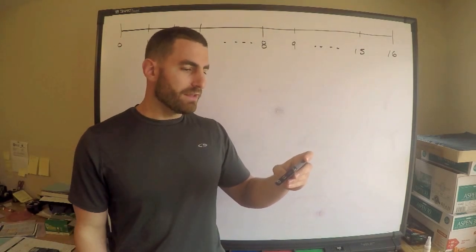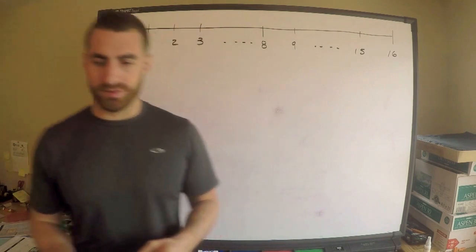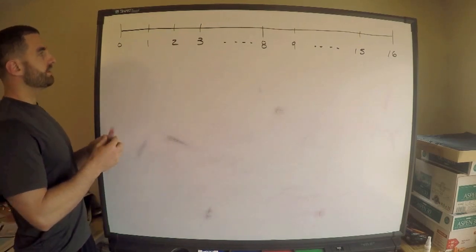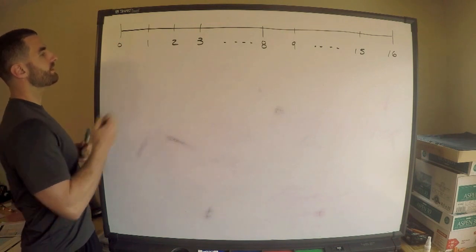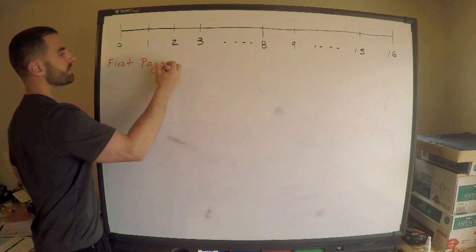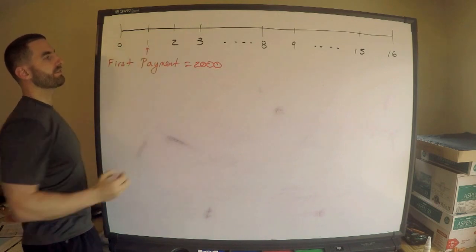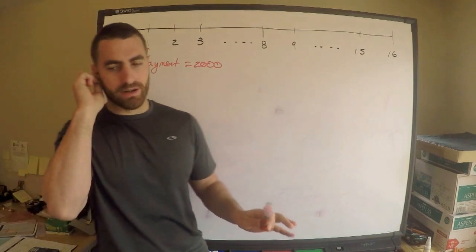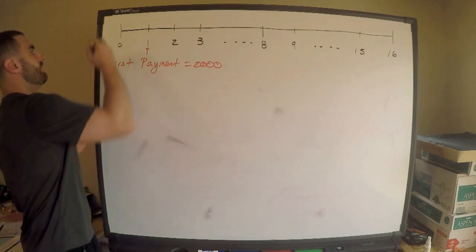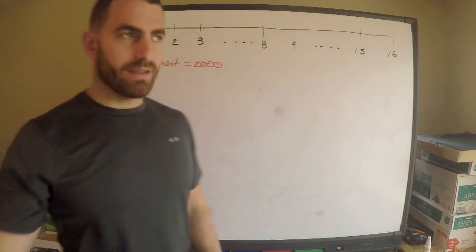You're given information about a loan paid with a series of 16 annual payments. The first payment is $2,000 and is due one year from now, so I'm going to write the $2,000 right here. The first payment is $2,000 and it's due at time one. Everything here is in years — important to realize that everything's in years.